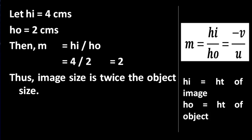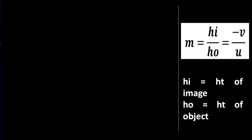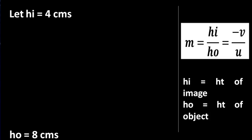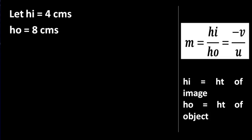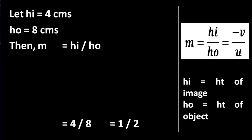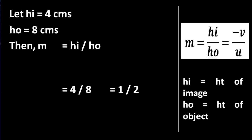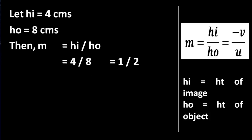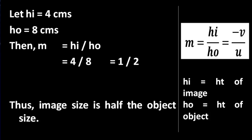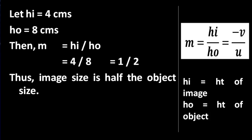Let us understand with another example. Let height of image be 4 centimeters and height of object be 8 centimeters. Magnification is the ratio of height of image to height of object, so we get magnification as 1 by 2 or half. This means that image size is half the object size.